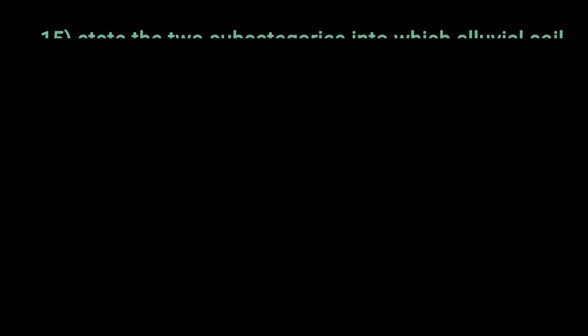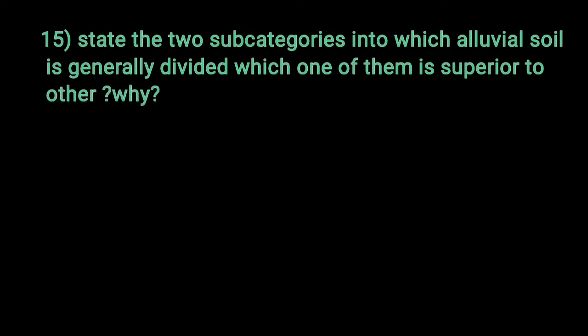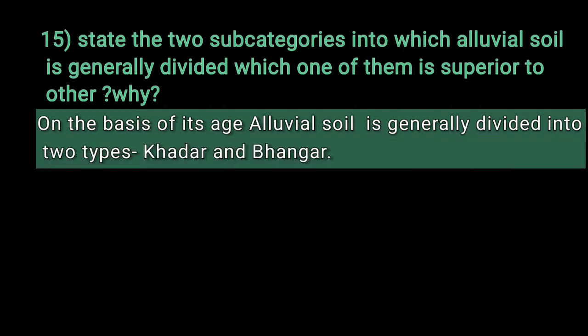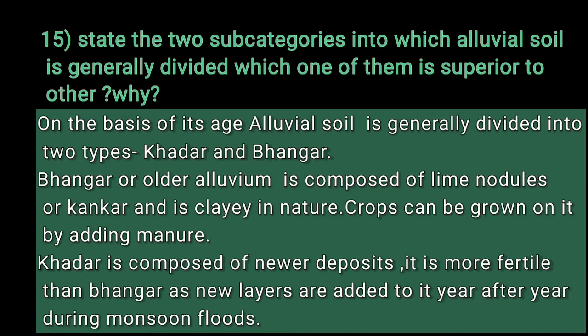State two sub-categories into which alluvial soil is generally divided, and which one is superior and why. On the basis of age, alluvial soil is divided into Khadar and Bangar. Bangar or older alluvium is composed of lime nodules or kankar and is clayey in nature; crops can be grown on it by adding manure. Khadar is composed of newer deposits and is more fertile than Bangar, as new layers are added year after year during monsoon floods.